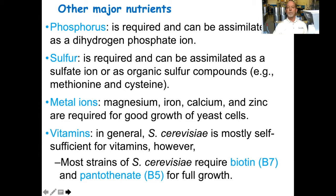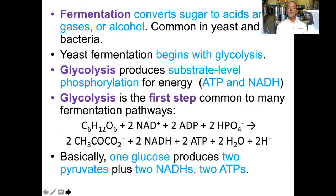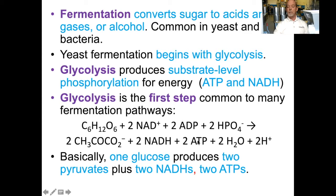Fermentation is a conversion of sugars to acids and gases or alcohol, and is common in yeast and bacteria. Yeast fermentation begins with glycolysis, which produces substrate-level phosphorylation for energy. The particularly important compounds are ATP and NADH. Glycolysis is the first step common to many fermentation pathways. A hexose such as glucose, plus 2 NAD+, plus 2 ADP, plus 2 HPO4, is converted to 2 pyruvates, 2 NADHs, 2 ATPs, 2 waters, and 2 hydrogens. So basically, 1 glucose produces 2 pyruvates, plus 2 NADHs and 2 ATPs.